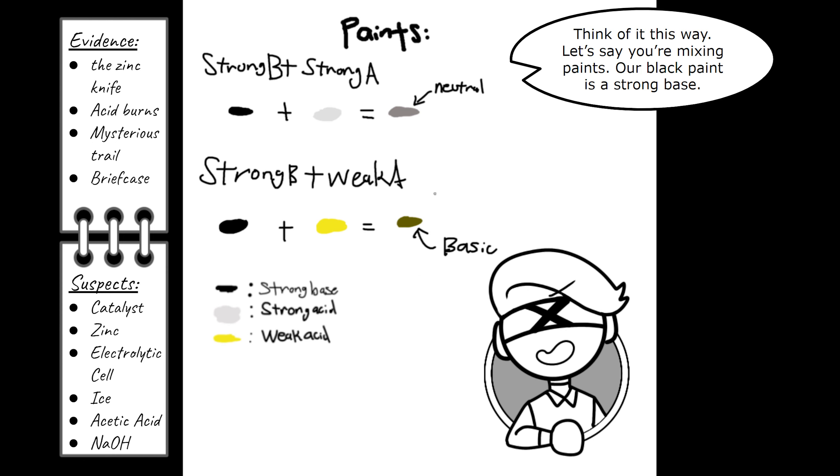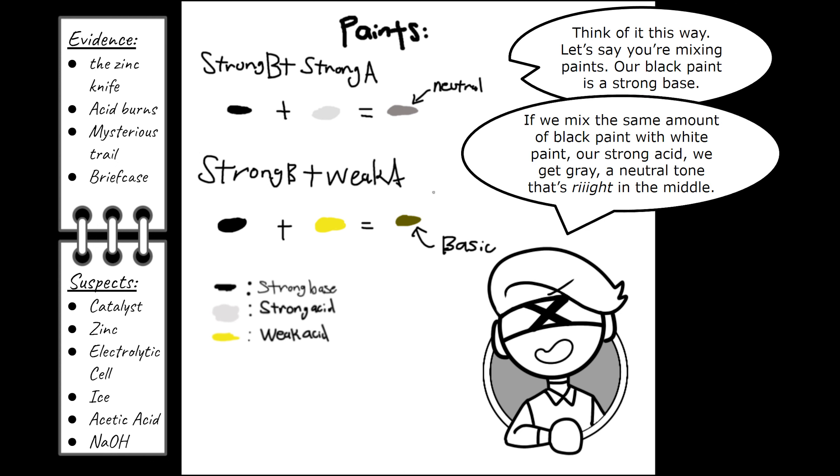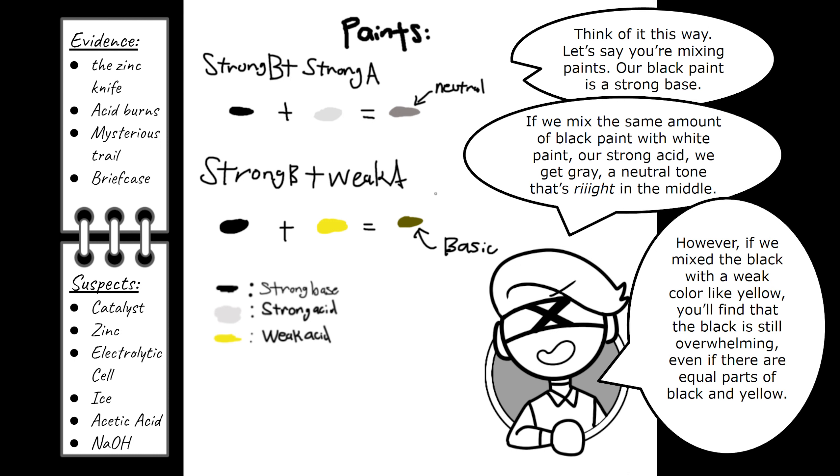Think of it this way. Let's say you're mixing paints. Our black paint is a strong base. If we mix the same amount of black paint with white paint, or strong acid, we get gray, a neutral tone that's right in the middle. However, if we mix the black with a weak color like yellow, you'll find that the black is still overwhelming, even if there are equal parts of black and yellow.